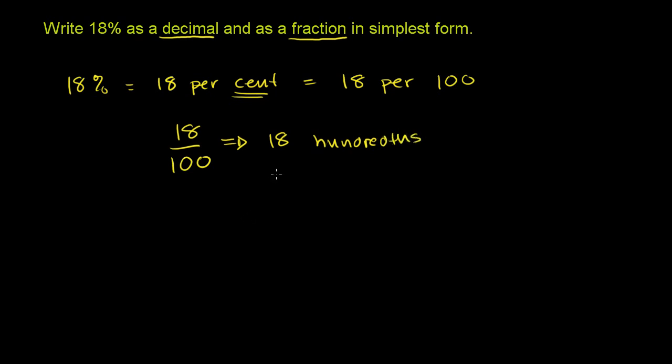And we know how to write that in decimal form. It's 0.18. You could view this as 1 tenth and 8 hundredths, which is the same thing, or 10 hundredths and 8 hundredths, which is 18 hundredths.